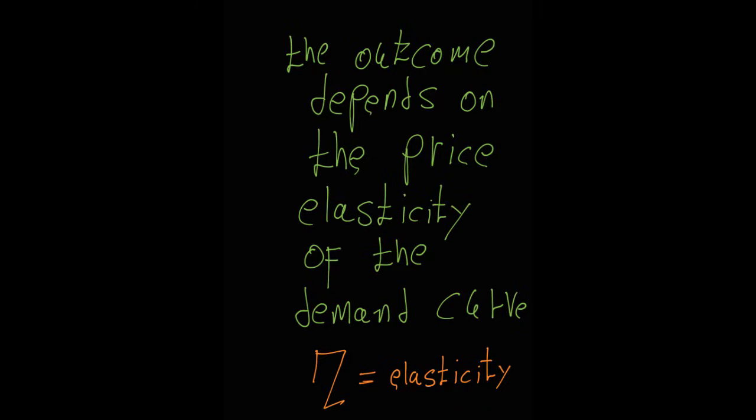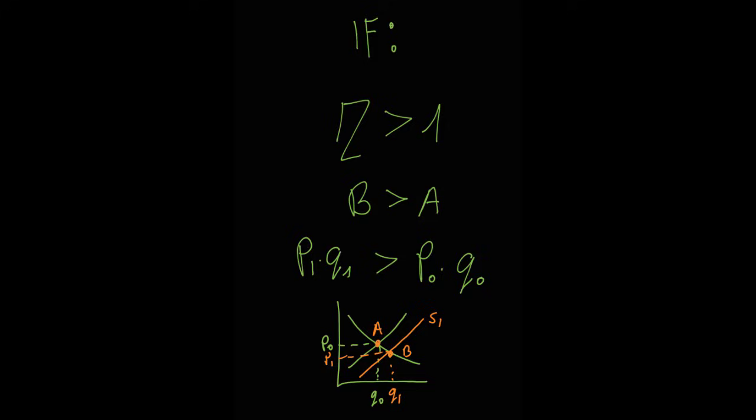All it measures is how sensitive we are to a price change. Basically, when a price drops, do we go out and buy a ton more or do we just buy a little bit more? Think of it like this. If demand is elastic, it's like a stretchy rubber band. A small drop in price causes us to stretch our wallets and buy a whole lot more. Think about things you don't strictly need, like movie tickets. But if demand is inelastic, it's more like a rock. It's rigid. A price drop doesn't really change our habits much. We only buy a little more. Think of essentials, like gasoline.